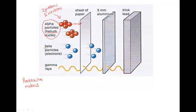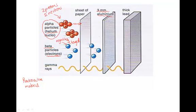The next type is beta particles. Beta particles are just electrons — if you imagine an atom, the electrons spin around the outside, and beta particles are those electrons fired out. They haven't got the nucleus, just the electrons, so they're negatively charged. These are more penetrating than alpha particles and will go through a sheet of paper, but a three-millimeter sheet of aluminium will stop them.